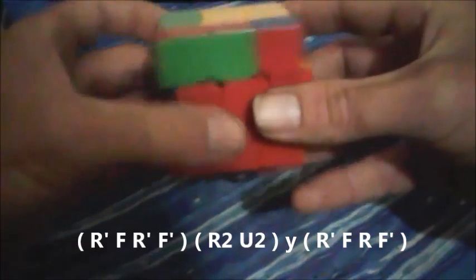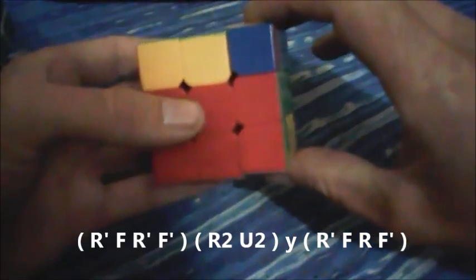R prime, F, R prime, F prime, R2, U2 while doing the Y, sledgehammer R prime F R F prime.